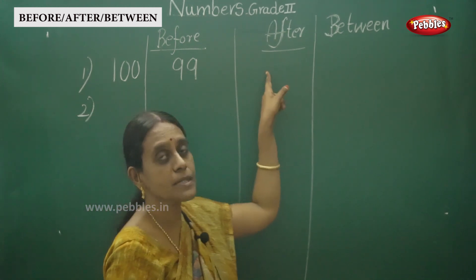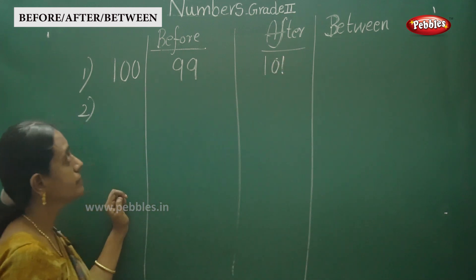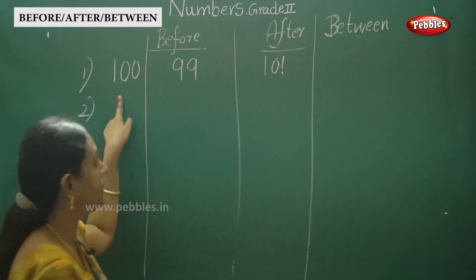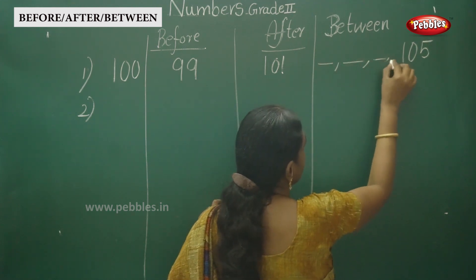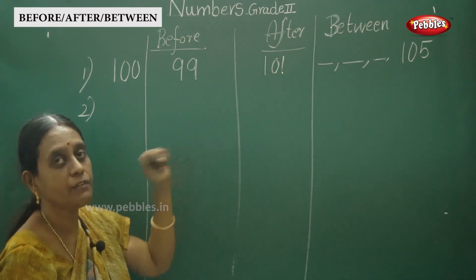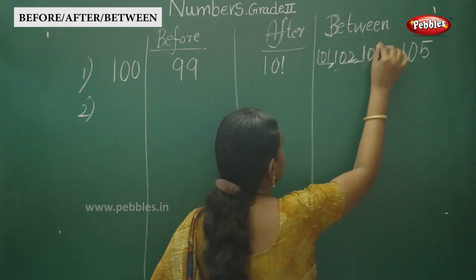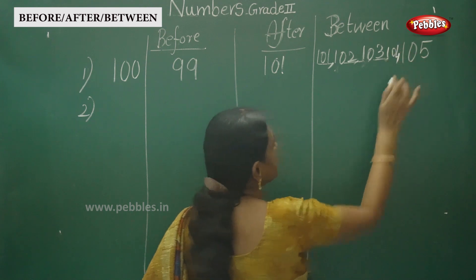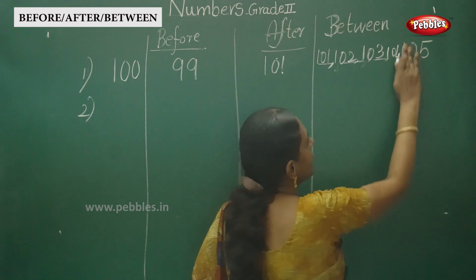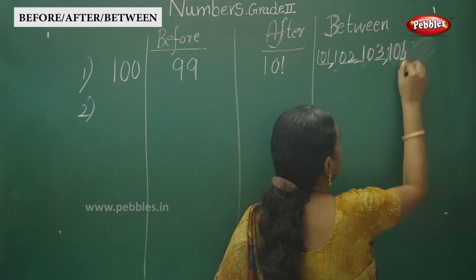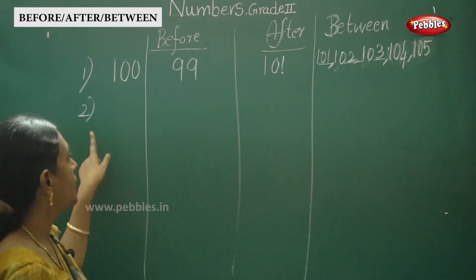And same way, what comes after 100? Simple — 101. And between numbers: up to 105, you have to write here one hundred and five. So we write: one hundred and one, one hundred and two, one hundred and three, and one hundred and four. This is the before number, after number, and between number up to one hundred and five.